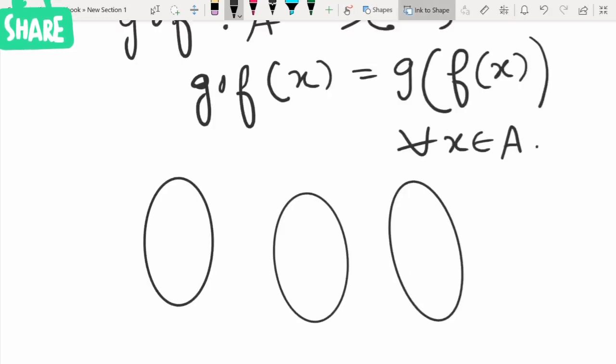If we have A, B, C here, the function f is from A to B and g is from B to C.